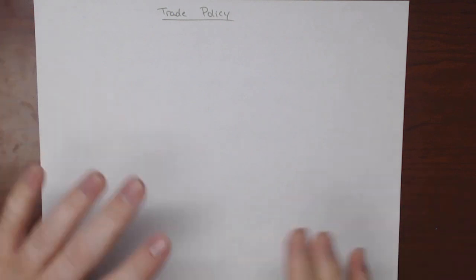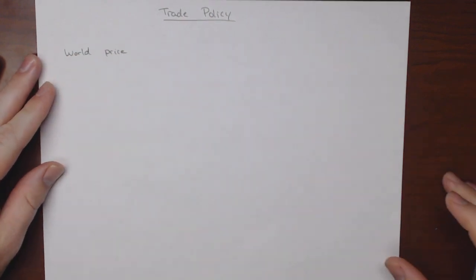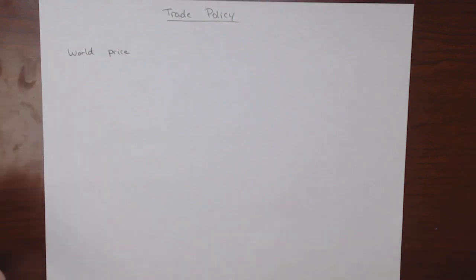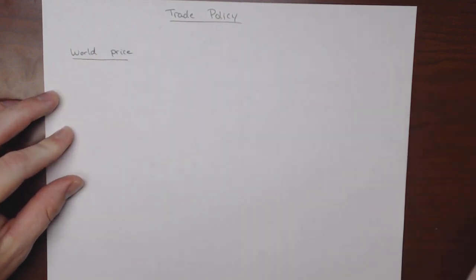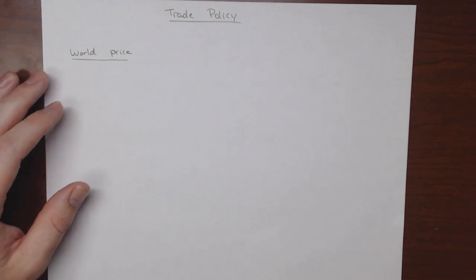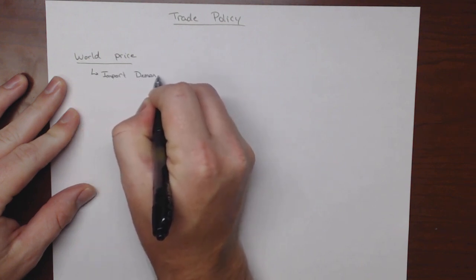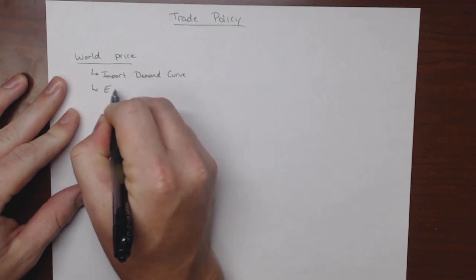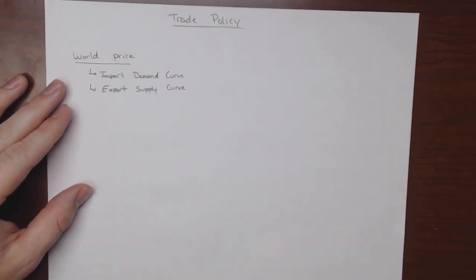What we're going to do today is introduce the determinants of the world price. Previously, we've kind of just given you the world price and asked you to accept it. We haven't really talked about where it comes from — obviously it comes from comparative advantages, but how do we really determine it? To do that, we're going to get into what are known as the import demand curve and the export supply curve.